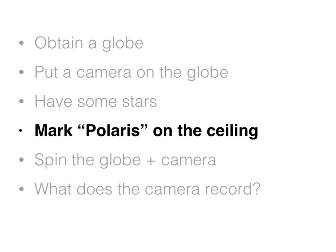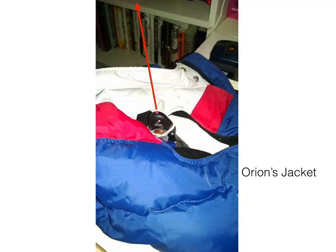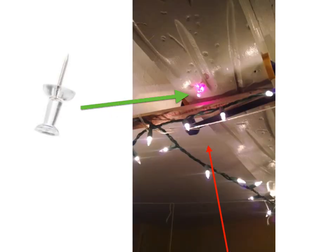Next is to mark Polaris on the ceiling. I used a little clicker with a laser pointer from my classroom. I had some pennies and a rubber band as my laser dot, and I just shoved it up against the globe's jacket so it pointed at the ceiling. Then I stuck a thumbtack in the ceiling, and it glowed very nicely because it was one of these clear thumbtacks — it really reflected the laser light very well.